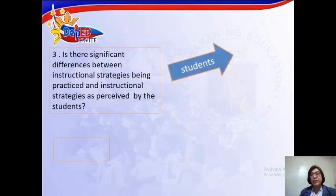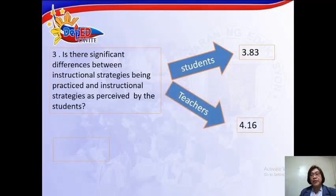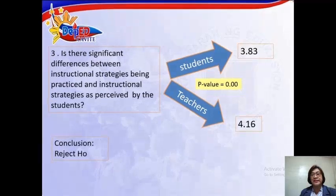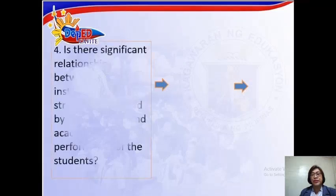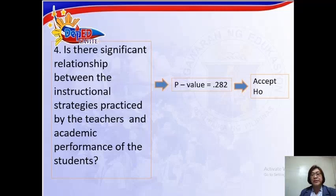For research question number three, the computed mean is 3.83 for students and 4.16 for the teachers, with a p-value of 0.00, which connotes that there is no significant difference between instructional strategies being practiced by the teachers as perceived by students. For research question number four, the p-value is 0.282, which connotes that there is no significant relationship between the instructional strategies practiced by the teachers and the academic performance of the students.